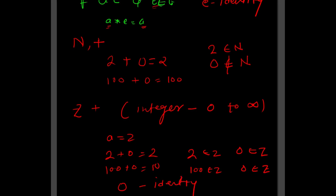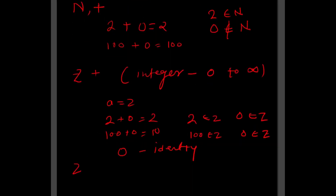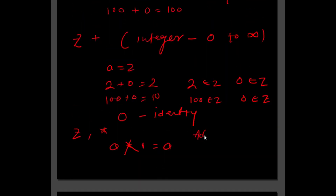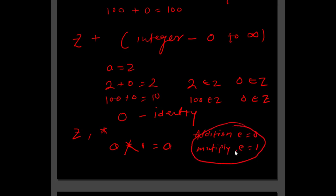Remember: for any addition operation, the identity element e is equal to 0. For multiplication — for example Z with the multiplication operator — the element which on multiplication gives you the same result is 1. So for addition, e equals 0; for multiplication, e equals 1.